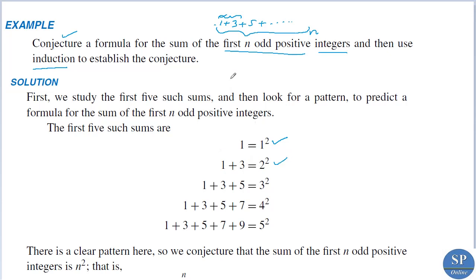Next, for the first three odd integers, that is 1 plus 3 plus 5, it is 9, which can be written as 3 squared. Then for the first four terms, that is 1 plus 3 plus 5 plus 7, it is 16, which can be written as 4 squared.